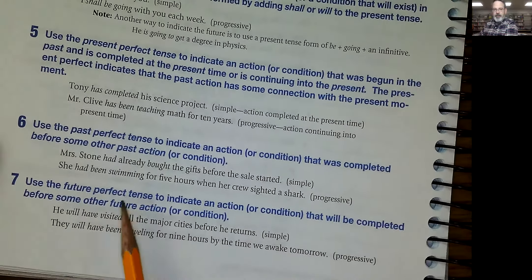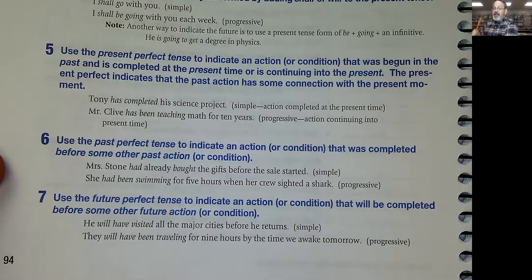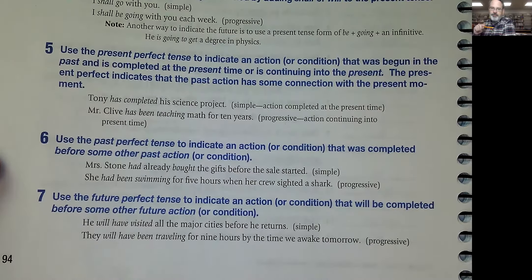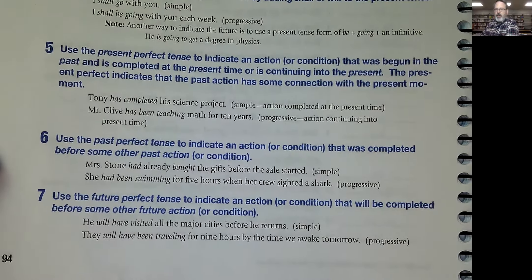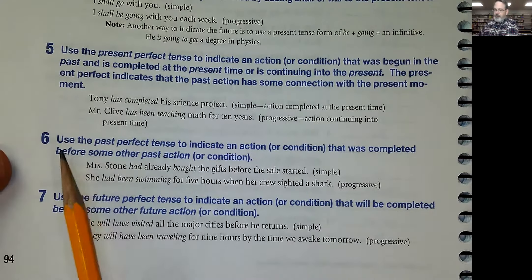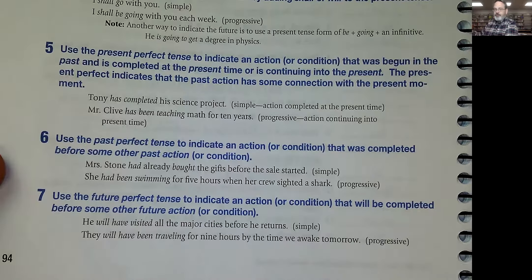Number six: use the past perfect tense to indicate an action or condition that was completed before some other past action. So past perfect is still all past, but there's something else that was completed after it. For example, Mr. Stone had already bought the gifts before the sale started — the sale started in the past, but even before that, Mr. Stone bought the gifts. She had been swimming for five hours when her crew sighted a shark — they sighted a shark in the past, but she'd been swimming for five hours even before that. Use the future perfect tense to indicate an action or condition that will be completed before some other future action. He will have visited all major cities before he returns — his return is in the future, and also in the future but before he returns, he will have visited the major cities.